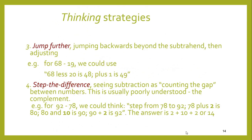'Step the difference' — we could be counting the gap. 92 minus 78: well, 78 and 2 make 80, another 10 makes 90 — so that's 12. And another 2 makes 92, so altogether 12 and 2 is 14. 14 is the difference between 92 and 78.